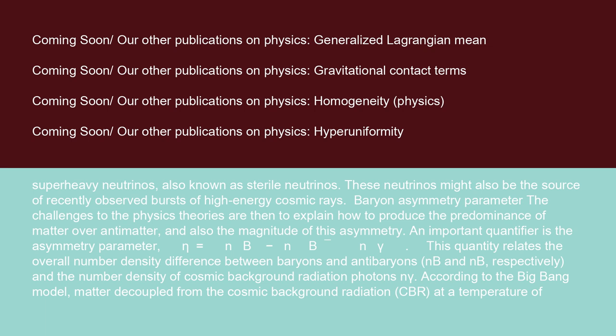Baryon asymmetry parameter. The challenges to the physics theories are then to explain how to produce the predominance of matter over antimatter, and also the magnitude of this asymmetry. An important quantifier is the asymmetry parameter: η = (nB - nB̄)/nγ. This quantity relates the overall number density difference between baryons and antibaryons (nB and nB̄, respectively) and the number density of cosmic background radiation photons nγ.